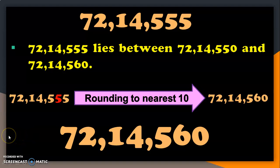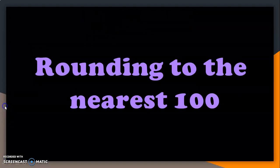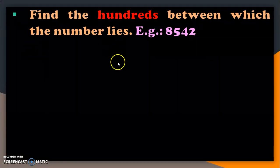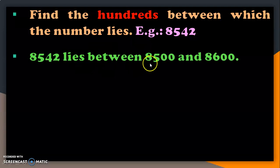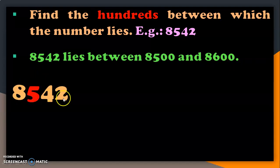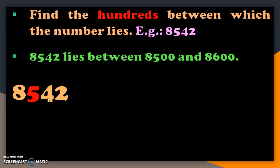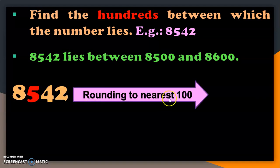Hope rounding to the nearest ten has been clear so far. Now let us move on to rounding to the nearest hundred. We need to find the hundreds between which the number lies. Take the number 8,542. In the hundreds place, you have 5 and 542 lies between 500 and 600. So 8,542 lies between 8,500 and 8,600. The target digit is 5 in the hundreds place. The digit to the right of the target digit is 4, which is less than 5, so we round down to the lower limit. Rounding 8,542 to the nearest hundred gives 8,500.